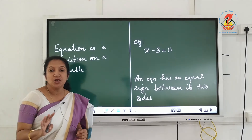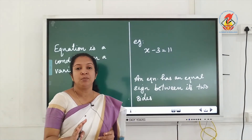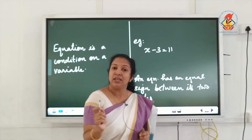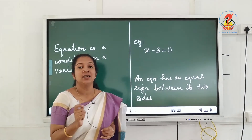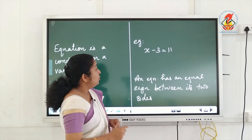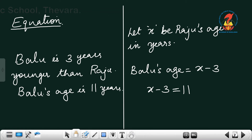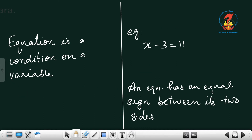So an equation is a condition on a variable where both the left-hand side and the right-hand side are separated by an equal sign. Here, X minus 3 is equal to 11 is the condition. What is given is that Baloo was three years younger than Raju, so Baloo's age is X minus 3, and it is given as 11.